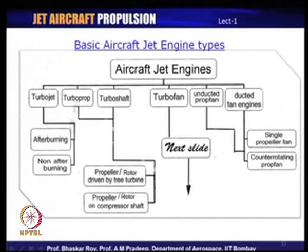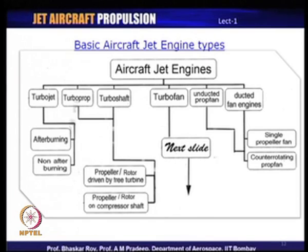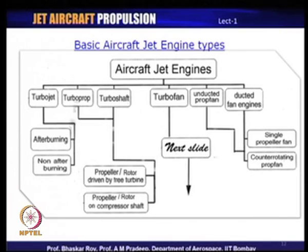Turboprops can also be configured as turboshaft engines used in helicopters, where there is no jet thrust — the thrust is generated by the main rotor blade. In both cases, the propeller or rotor blade is driven by a free turbine, sometimes mounted on the compressor shaft with a gearbox. Another popular type is the turbofan — there are many types of turbofans prevalent, as well as advanced concepts like the unducted prop fan and ducted fan engines, with either single or counter-rotating prop fan systems.